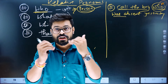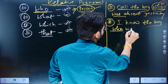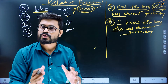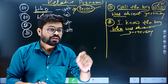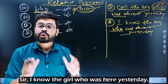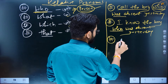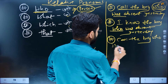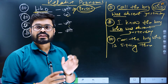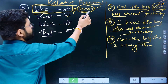Sir, I know the boy who was absent yesterday. I don't know the girl who was in the school yesterday. I know the girl who was here yesterday. Call the boy who is sitting there — us ladke ko bulao jo wahan baitha hua hai. So basically, 'who' is used for persons with the sense of 'jo' or 'jisne'.